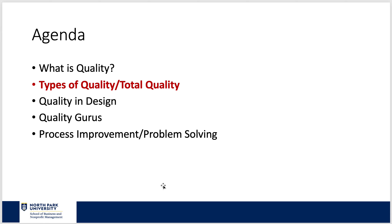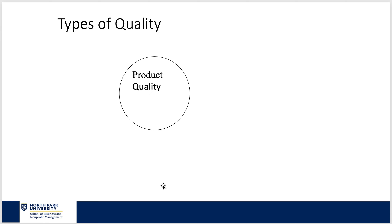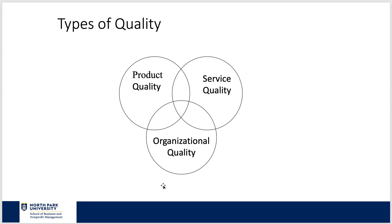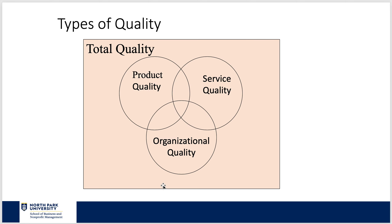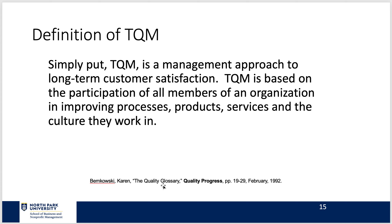What are the types of quality and what is total quality? There's product quality, service quality, and organizational quality. Together, I guess we would call that total quality. When we talk about TQM, or total quality management, it's a management approach to long-term customer satisfaction. It's based on the participation of all members in an organization in improving products, processes, services, and the culture they work in — from Quality Progress Magazine, all the way back in 1992.